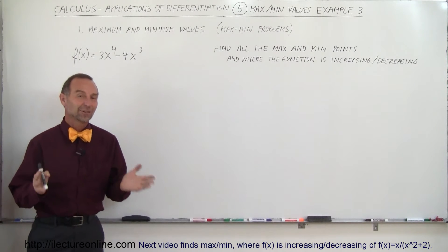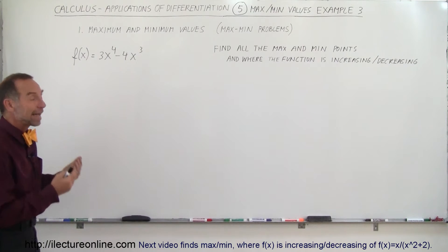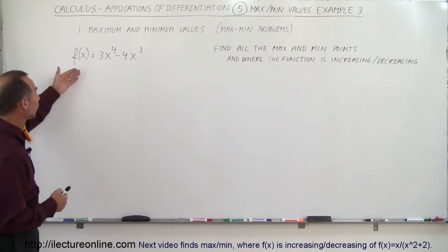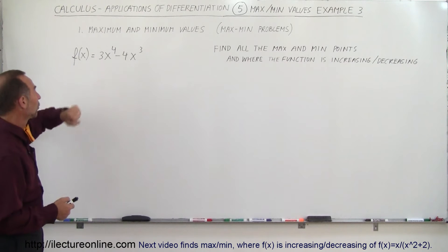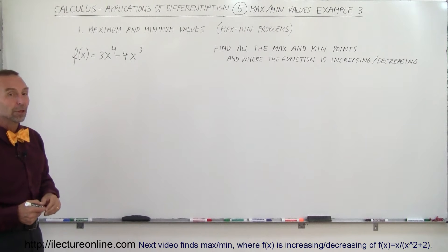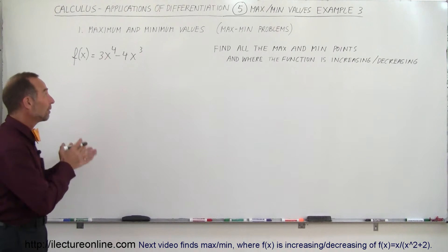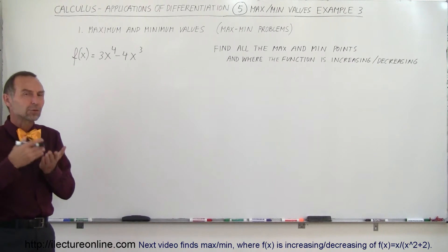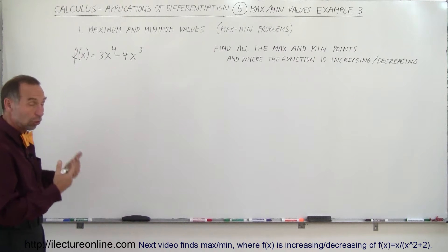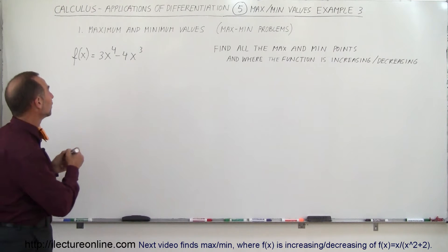Welcome to Electro Online. Here's our next example of how to find the maximum values of a function. The function is a fourth-order function: 3x to the fourth minus 4x cubed. We're going to find the derivative, set it equal to zero, and find the places where the slope will be equal to zero. Those are the critical points of the function.